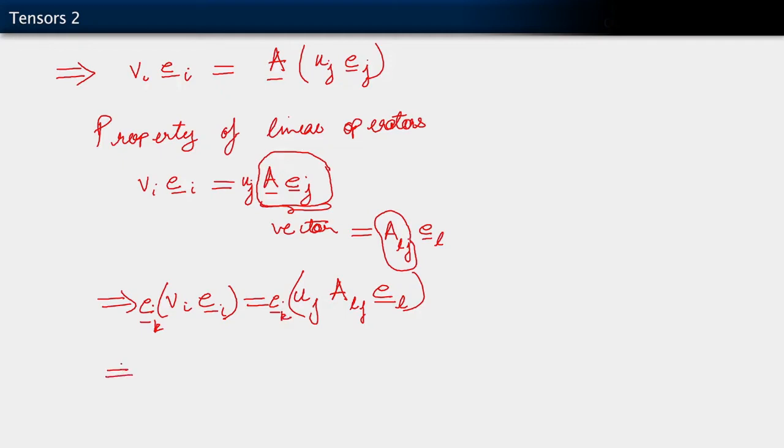So what does that lead to now? On the left-hand side, we have V_i delta_IK. On the right-hand side, using the linearity of all the objects we are working with, we have U_j A_L J delta_KL. On the left-hand side then, the Kronecker delta does its job. It gives us V_K equals U_j. Now, the Kronecker delta on the right-hand side does its job to convert our A_L J into A_K J. And to see how this works, you could very well just expand the relation on the second last line.